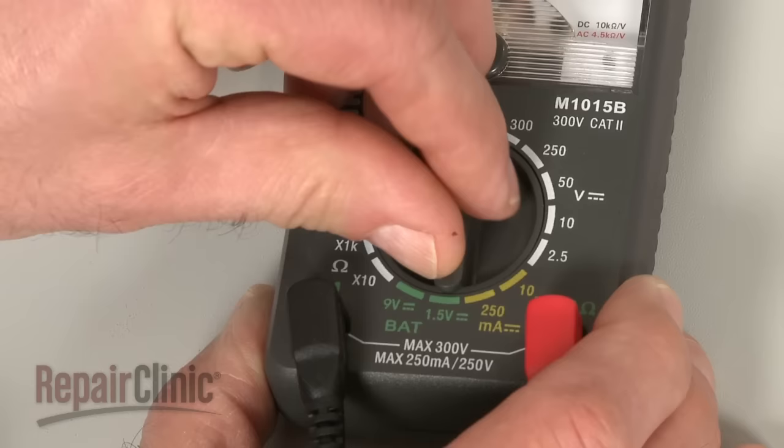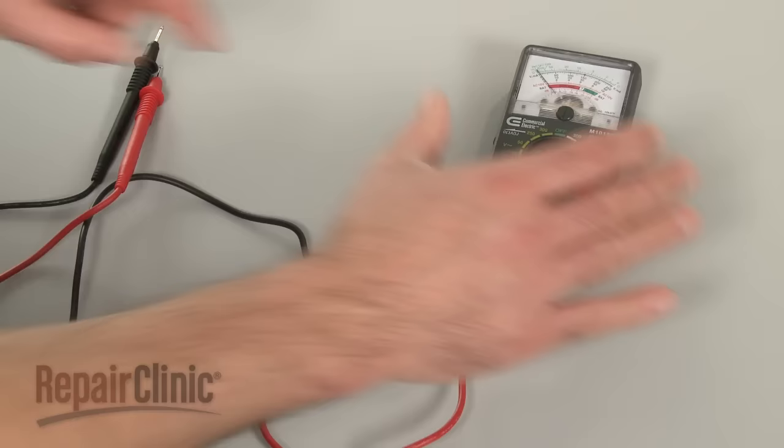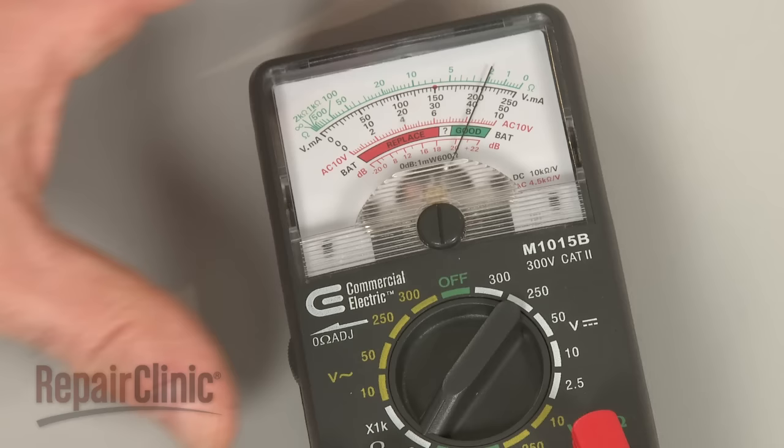When using an analog model, first rotate the range selection dial to the lowest setting for ohms of resistance. Then calibrate the meter by pinching the probes together while adjusting the needle to read zero.